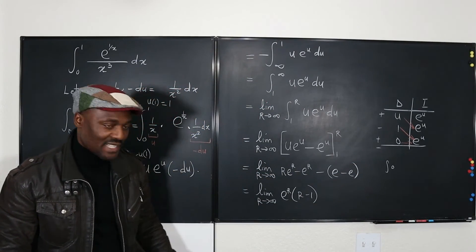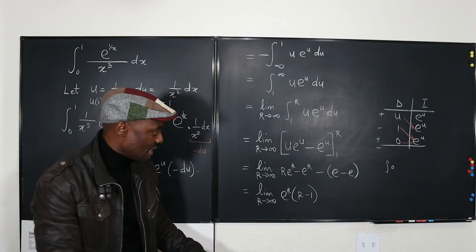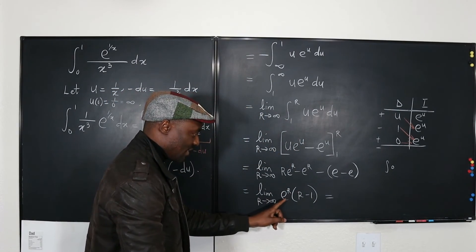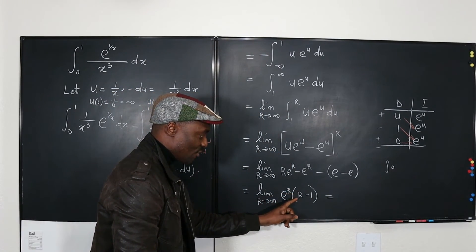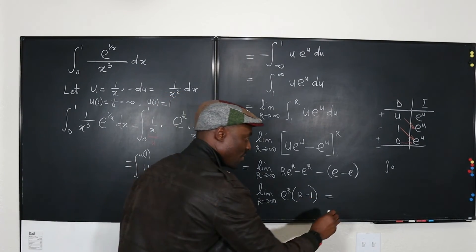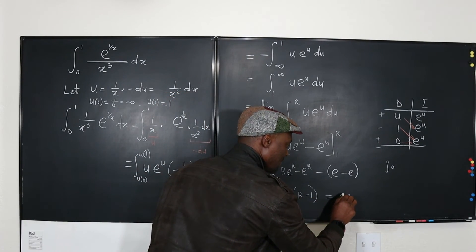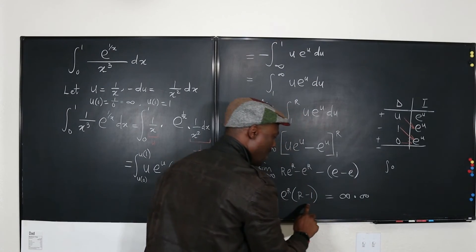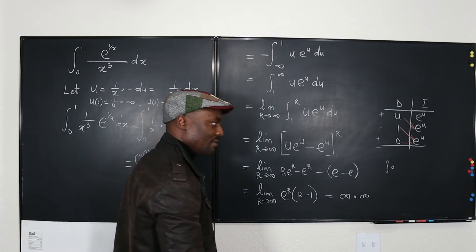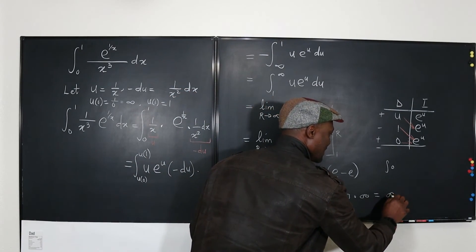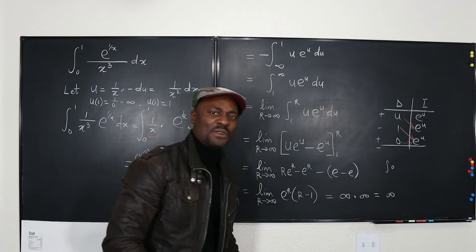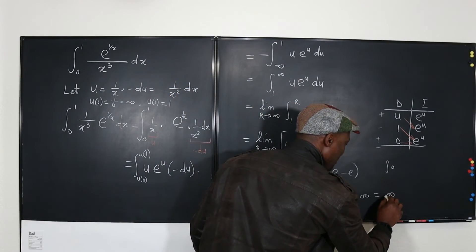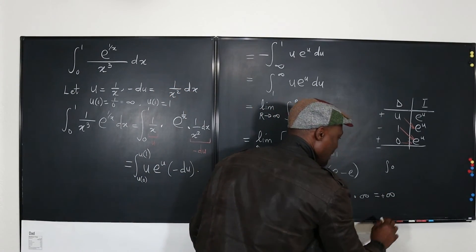What would this answer be? As r goes to infinity, e to the r goes to infinity and (r minus 1) goes to infinity, so we end up with infinity times infinity, which is infinity. Infinity minus one is still infinity. So this diverges — you say the integral diverges, or it is positive infinity.